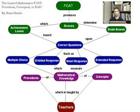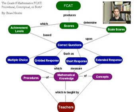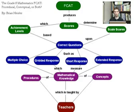Regarding scale scores, the average score for a level 3 achievement level is approximately 1,950. The scale score correlates to the achievement levels. The way these scores are determined is based upon the number of questions correctly answered. The types of questions on the test include multiple choice, grid response, short response, and extended response.